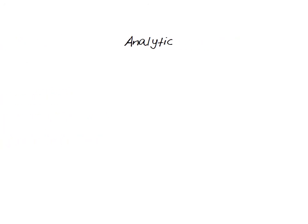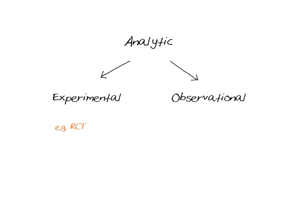Analytic studies can also be divided into the two broad categories of experimental and observational studies. Experimental studies are so called because they are similar to experiments in a lab — we intervene in some way and then try to measure the effect of what we have done. Randomised controlled trials are an example, where we randomise one group to a treatment or intervention, randomise another group to a placebo or control, and then follow both groups to see what happens. In observational studies, researchers don't intervene but rather observe what happens in the natural setting.